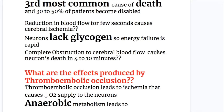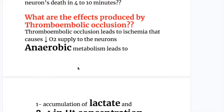Reduction in blood flow for a few seconds causes cerebral ischemia. Why? Because neurons lack glycogen, so energy failure is rapid. Complete obstruction to cerebral blood flow causes neuron death in 4 to 10 minutes.